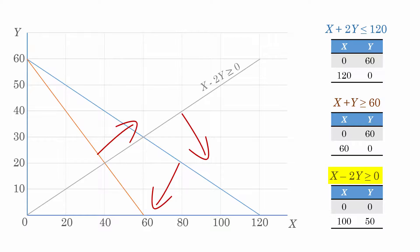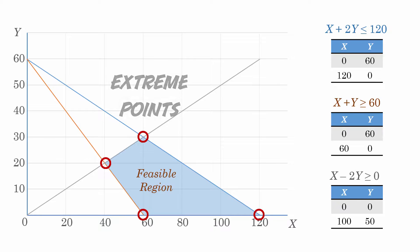By observing the directions of the arrows, we see that the region satisfying all three constraints simultaneously is this one here, which we call the feasible region. Now, the LP concept states that the optimal solution will occur at one of these corner or extreme points of the feasible region.